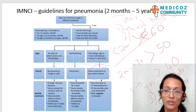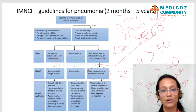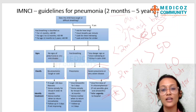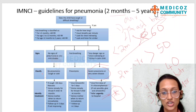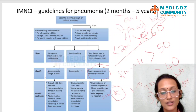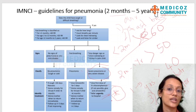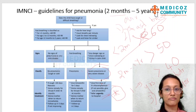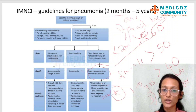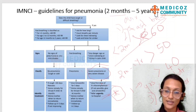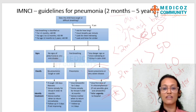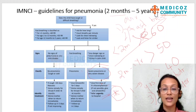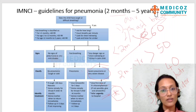For severe pneumonia, start IV chloramphenicol and refer the child. In IMNCI, children are classified by colour code: green for no pneumonia, yellow for pneumonia, and red for severe pneumonia where an initial antibiotic dose is given before referral. These three classifications apply to children aged two months to five years. For children less than two months, any fast breathing or relevant symptoms classify the child as a severe bacterial infection or severe pneumonia — there are only two categories: no pneumonia or very severe disease.